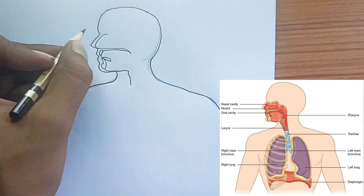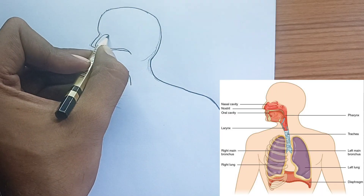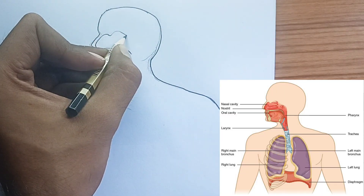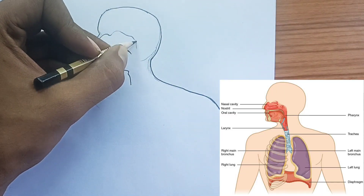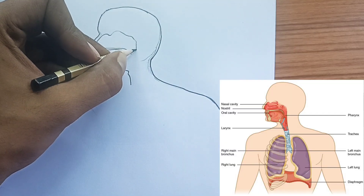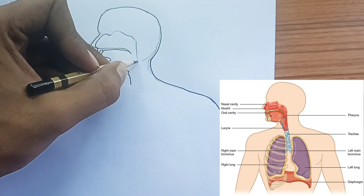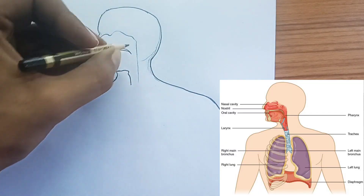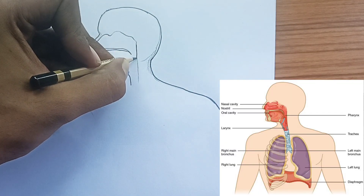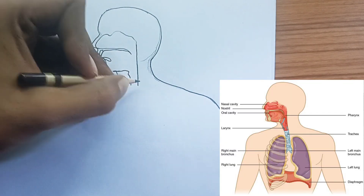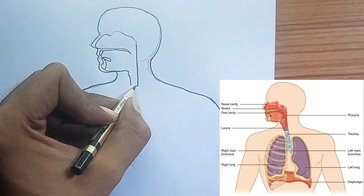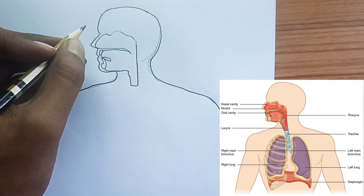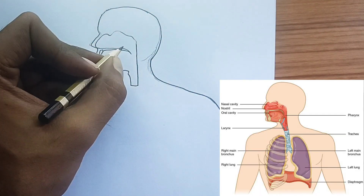Bronchi: The trachea then branches into two main tubes called bronchi, one for each lung. These bronchi further subdivide into smaller and smaller tubes within the lungs, like the branches of a tree. These smaller tubes are called bronchioles.